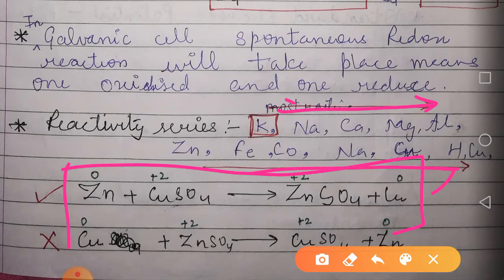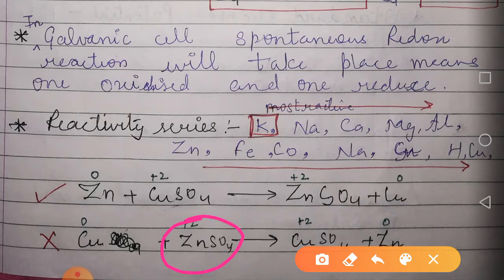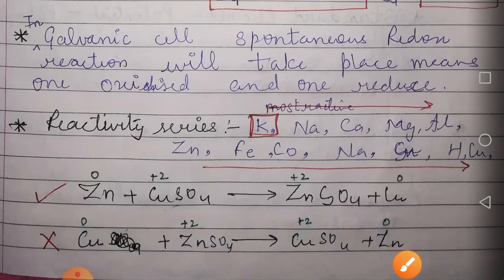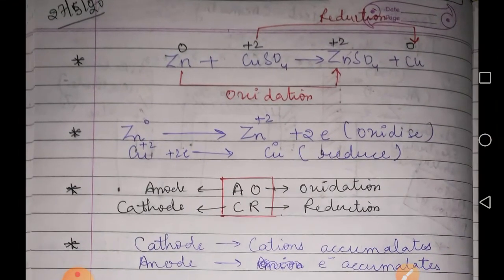In the reactivity series, potassium is at the top and copper is at the bottom, with zinc above copper. This means zinc can replace copper from its salt solution, but copper cannot replace zinc from its salt solution, since copper is lower than zinc in the series.